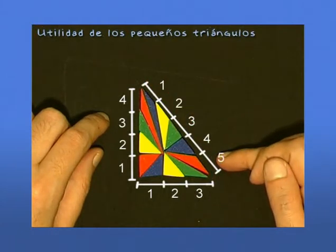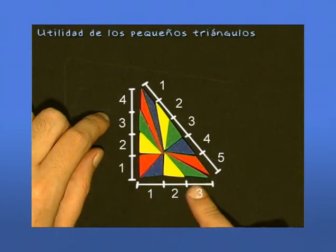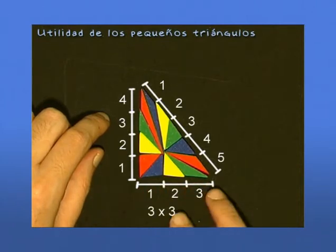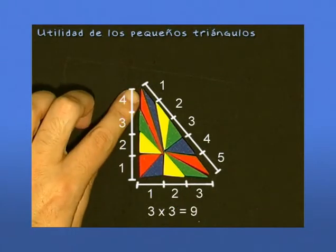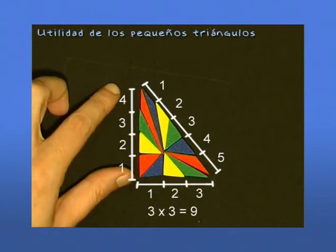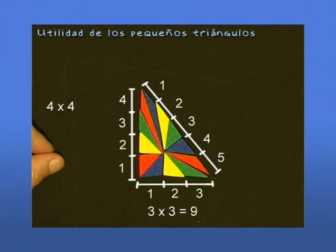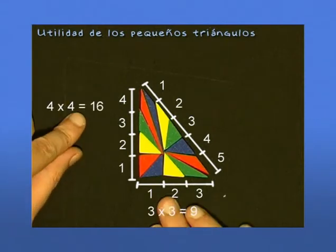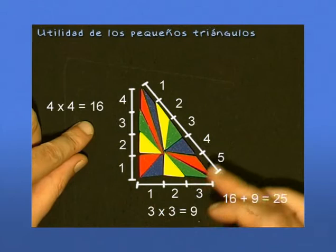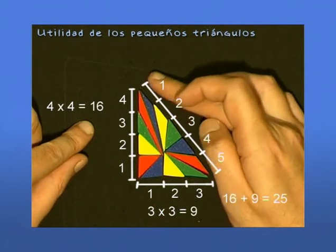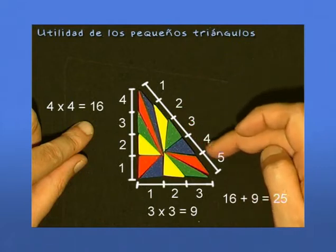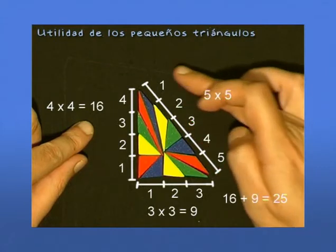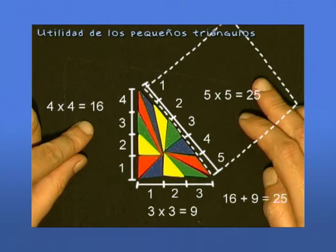This means that the square of this side is three times three equals nine, plus the square of this side is four times four equals sixteen. So we have sixteen plus nine equals twenty-five, which equals the square of the hypotenuse — that is, five times five equals twenty-five.